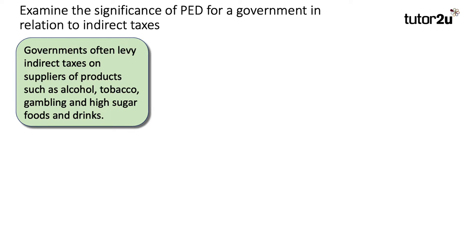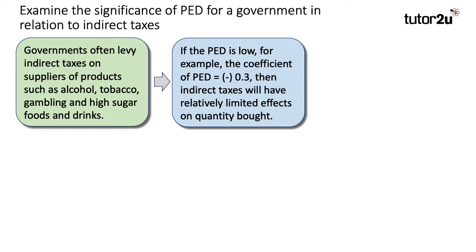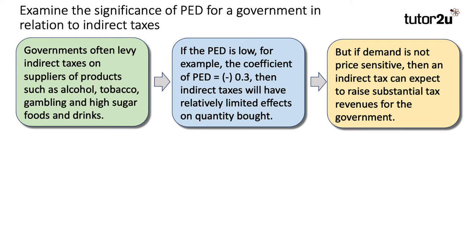Let's work through a chain of reasoning for this question: examine the significance of PED for a government in relation to indirect taxes. Governments often levy indirect taxes on suppliers of products such as alcohol, tobacco, gambling services, and high sugar foods and drinks. If the coefficient of price elasticity of demand is low — for example, 0.3 — then an indirect tax will have relatively small effects on the quantity consumers buy. But if demand is not price sensitive, which minus 0.3 is not, then an indirect tax can expect to raise a lot of tax revenue for the government. The key point is that low price elasticity of demand generates high tax revenues.